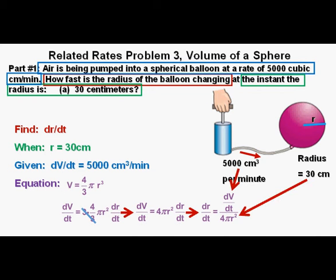We can next fill in our numbers on the right side of the equation, 5,000 cubic centimeters for dV/dt and 30 centimeters for radius. So that gives us 5,000 over 4 π times 30 squared.